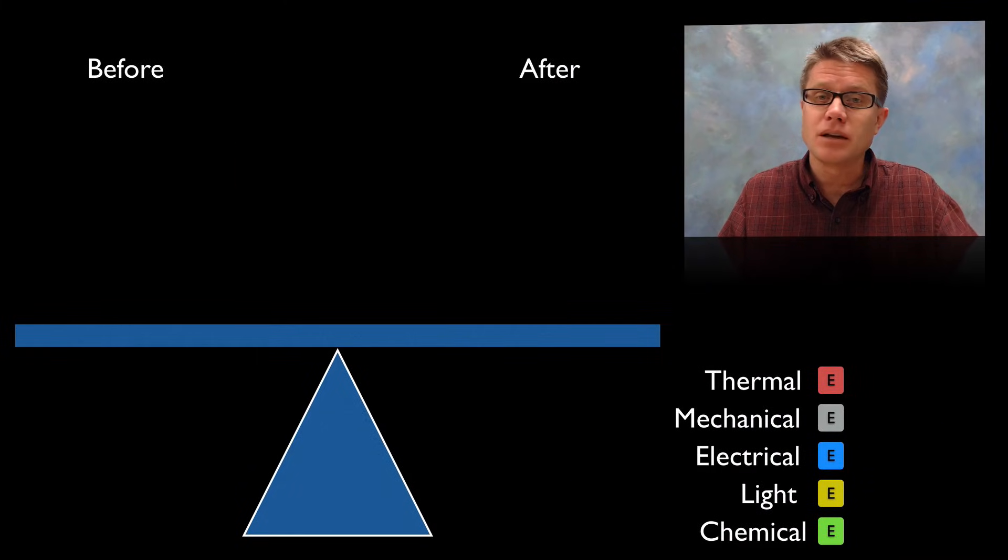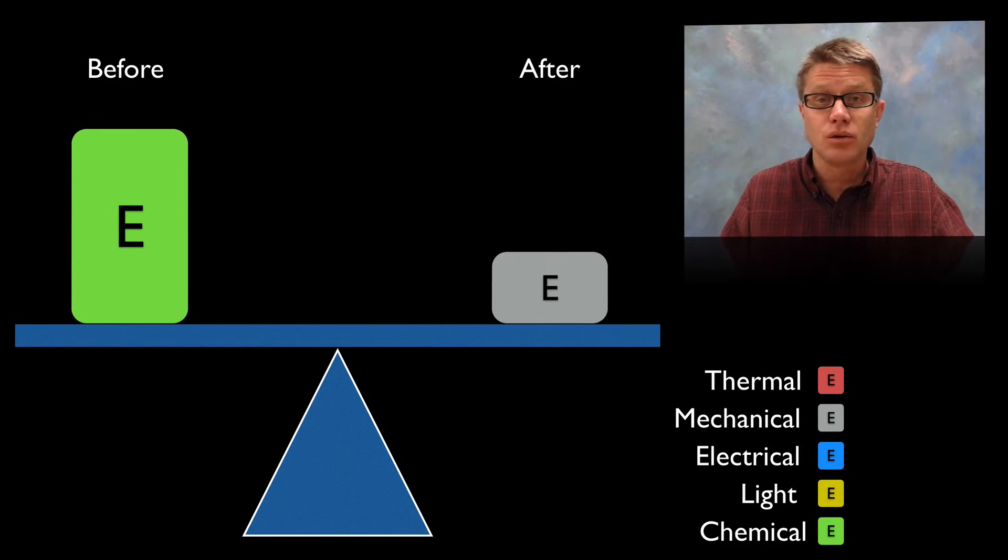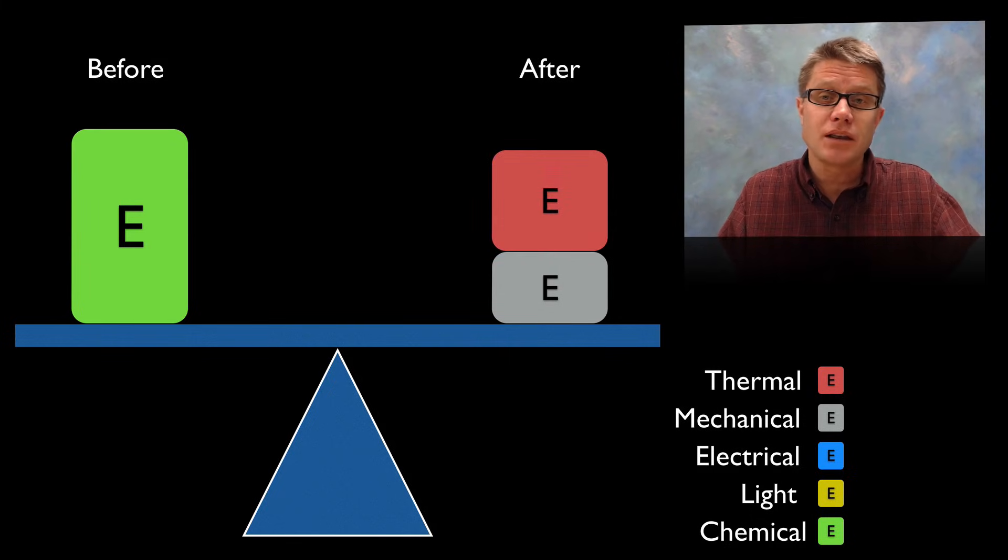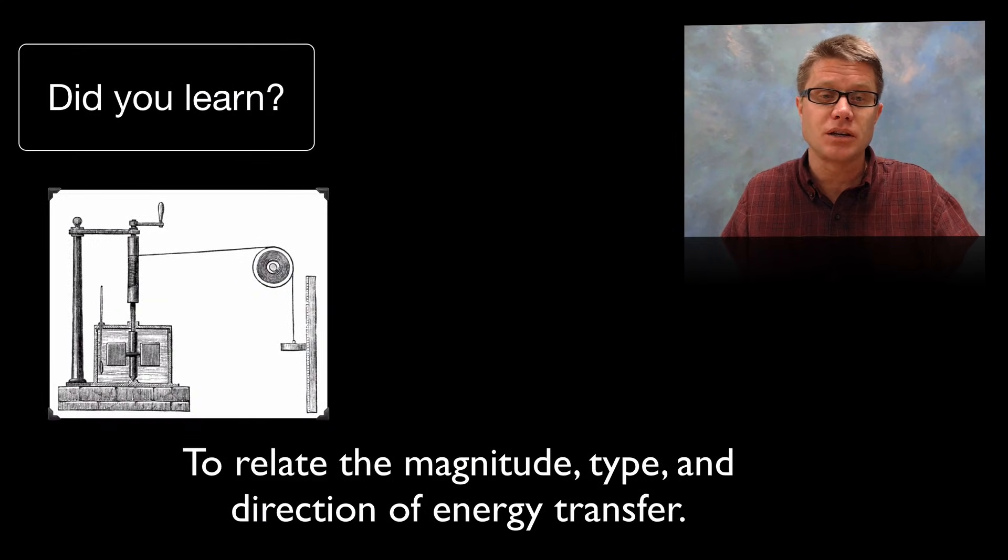If we go back to our teeter totter again, the amount of energy we had before was mostly chemical energy. But it's being converted into mechanical work. So we're driving that drive train, driving that car, moving that car. We're also transferring a lot of that energy through heat. We're also producing maybe electrical and light energy. But if we look on either side before and after, the amount of energy that we have has to be conserved.